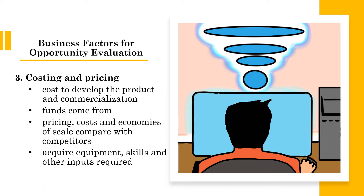How do the pricing costs and economies of scale compare with competitors? Economies of scale are the cost advantages reaped by companies when production becomes efficient, meaning increasing output leads to a lower long-run average cost.